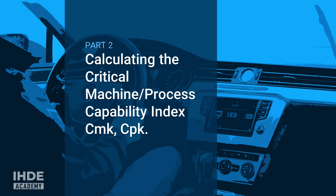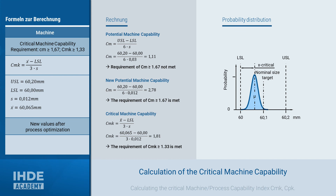In this chapter, we now calculate the critical machine capability index based on the previous data. The critical machine capability is found with the distance between the process location — the process mean — and the specification limit that is the smallest. As can be clearly seen here, the distance between the lower specification limit and the process location is the smallest. If you insert the values into the formula, a value of 1.81 is calculated for CMK. The machine thus meets the required capability of at least 1.33.